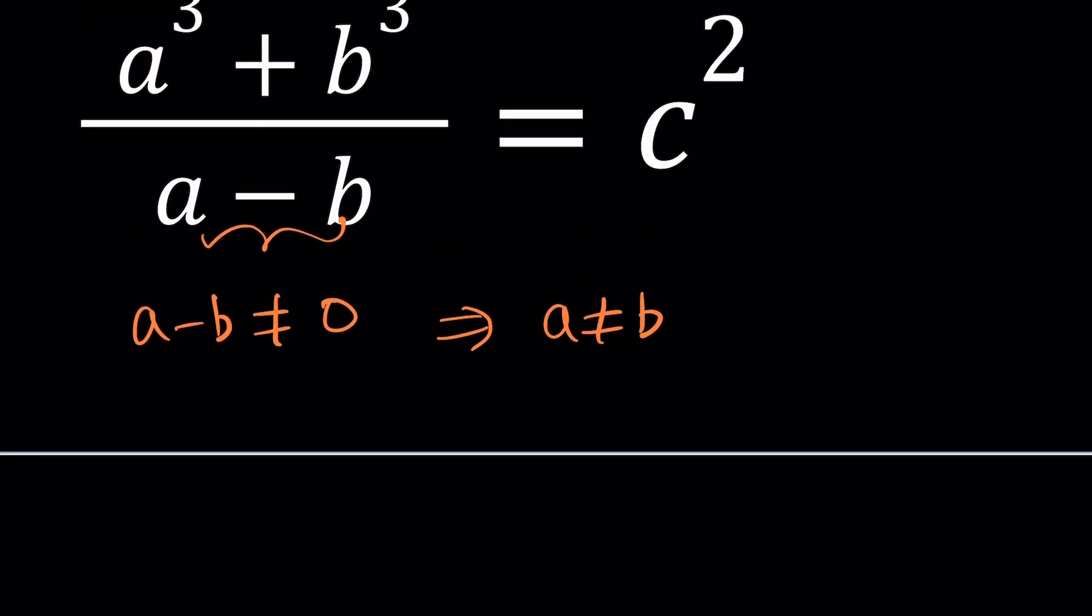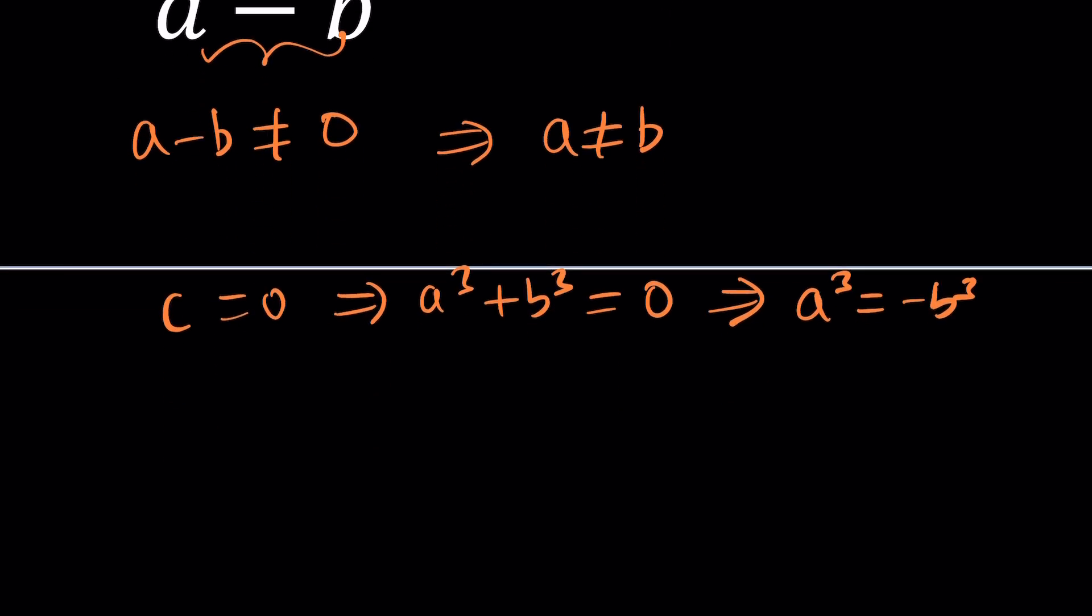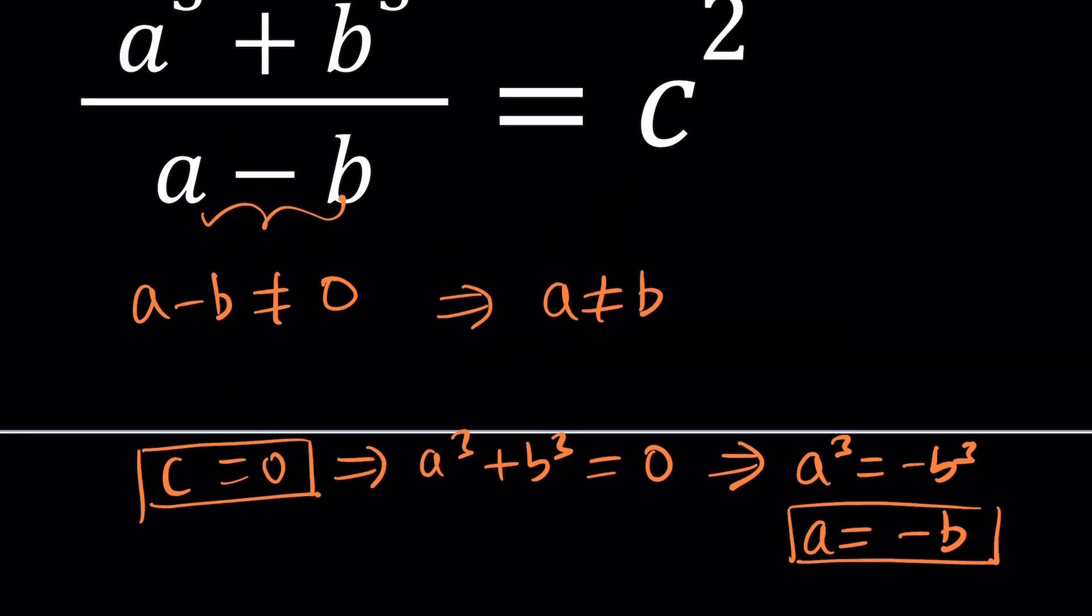So, suppose c is equal to zero, and this implies a cubed plus b cubed is equal to zero. And then from here, we can safely say that a cubed is equal to negative b cubed. And then if you cube root both sides, you're going to get a equals negative b. You cannot square root a negative number, but you can cube root a negative number. That's the good thing about odd powers. So, what does that mean? It means that c equals zero gives us a equals negative b.